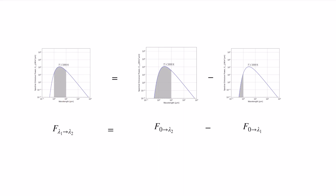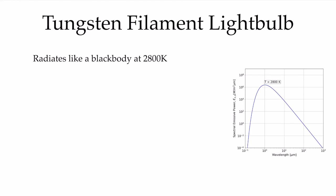Often we want the energy in a specific band rather than from zero to some value. For example, you might want to know how much energy is in the visible range. That's a simple manipulation: to find the fraction of radiation in the band λ₁ to λ₂, take F(0→λ₂) and subtract F(0→λ₁). That difference gives the fraction of energy in that specific band of the spectrum.